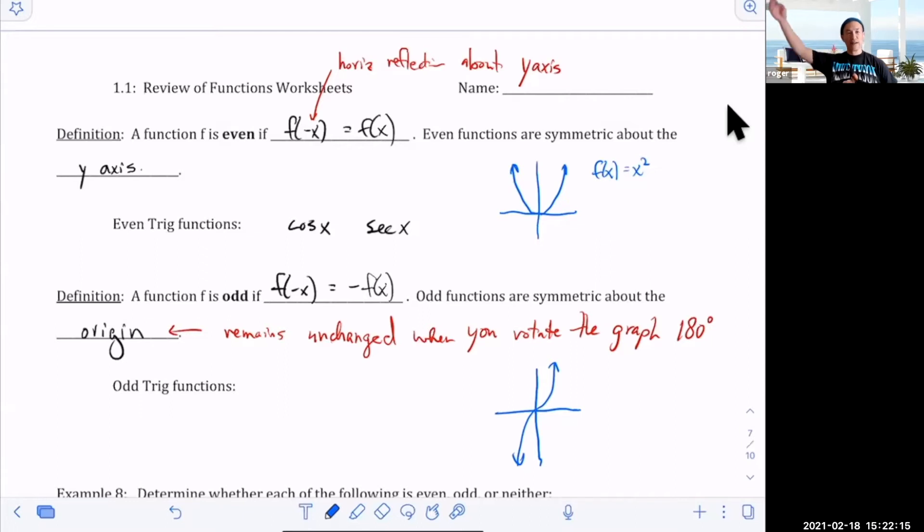And it's kind of tricky to do, but if you were to imagine you're like this and then you start to rotate, I can't do it but you rotate 180 degrees. I need like a card, but the graph remains unchanged after you rotate 180 degrees.